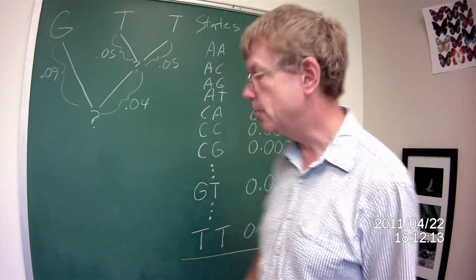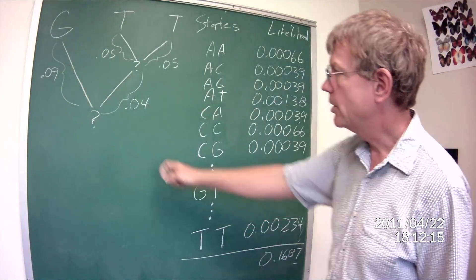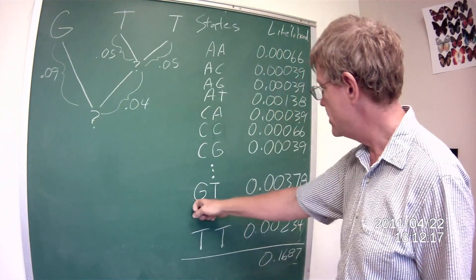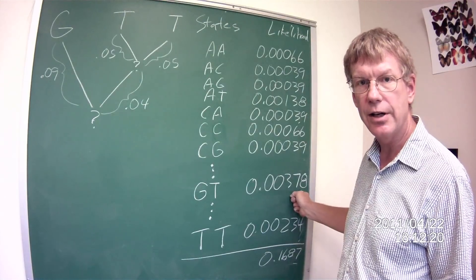Let's look at that G, T value. The probability that this was a G and this was a T is the highest in that entire table.